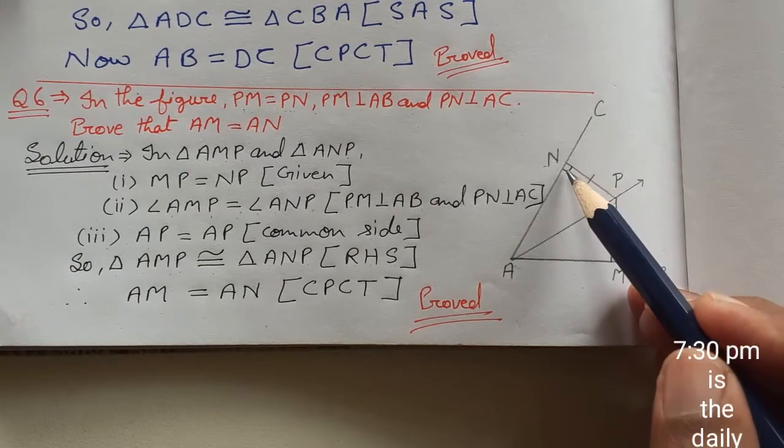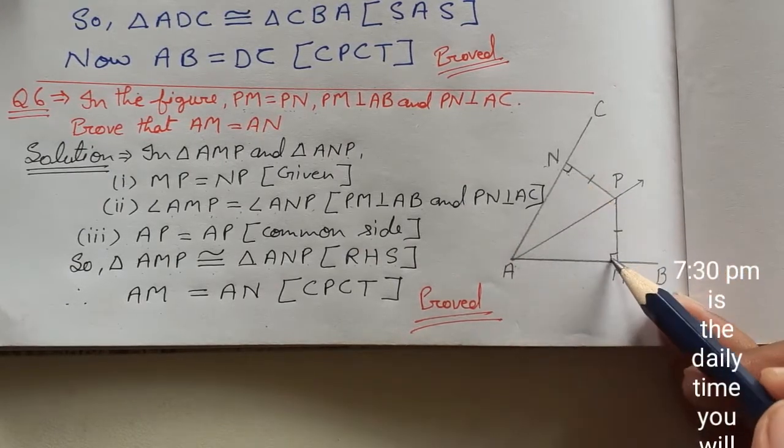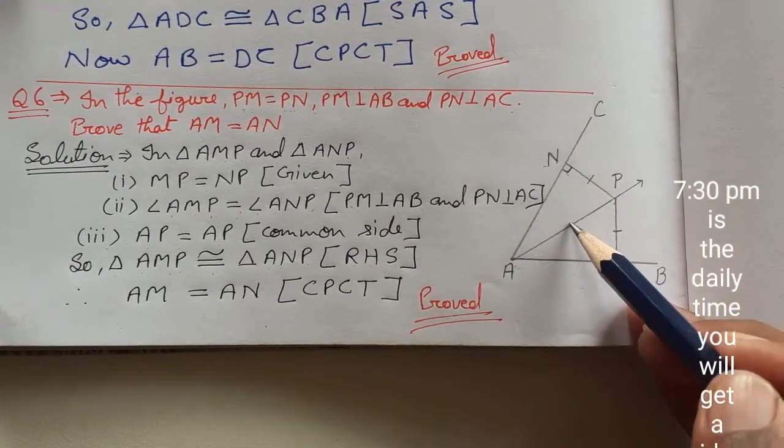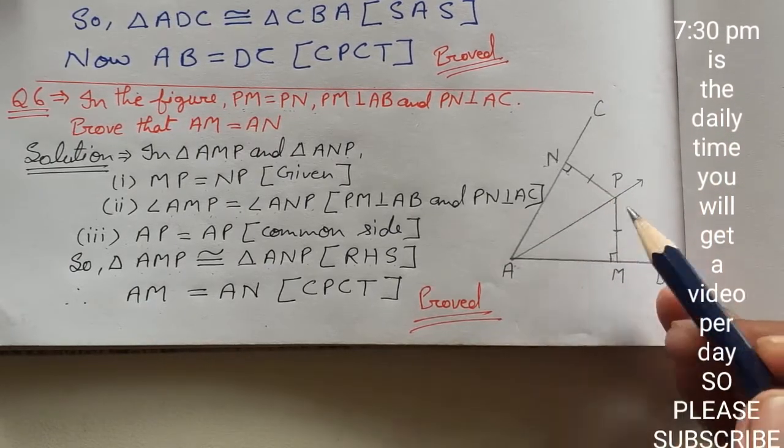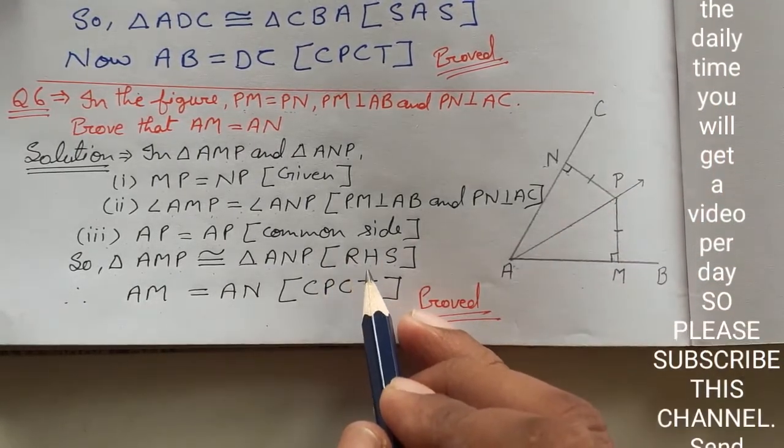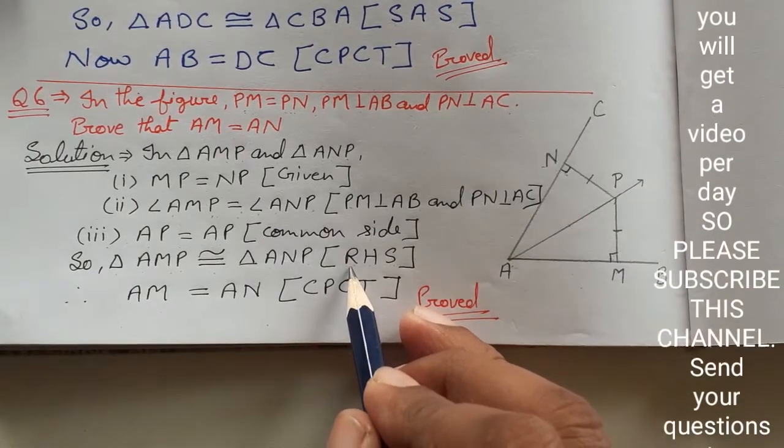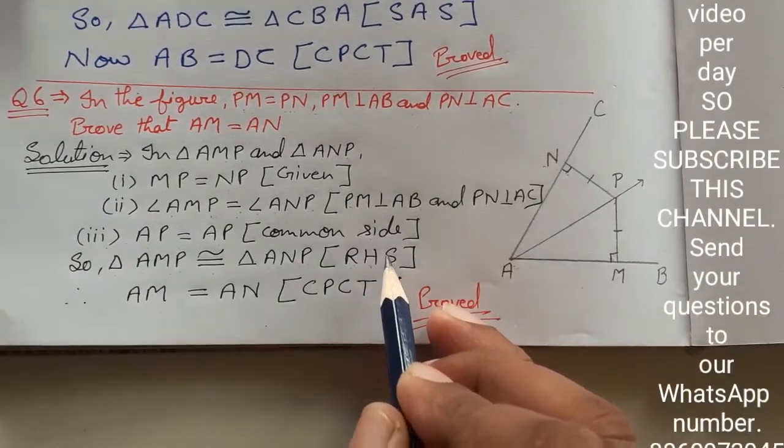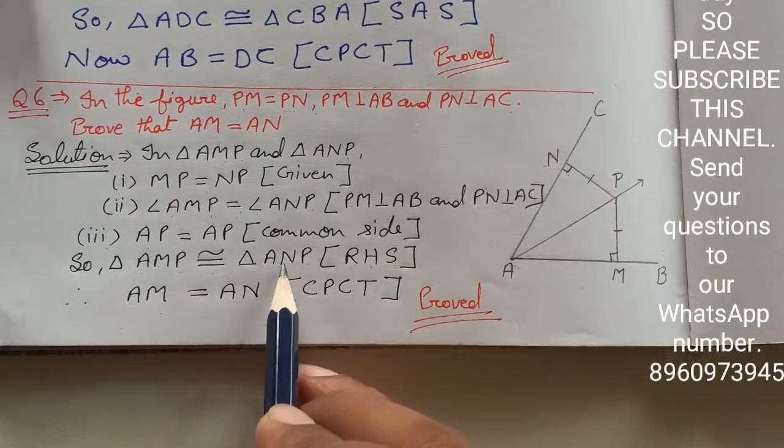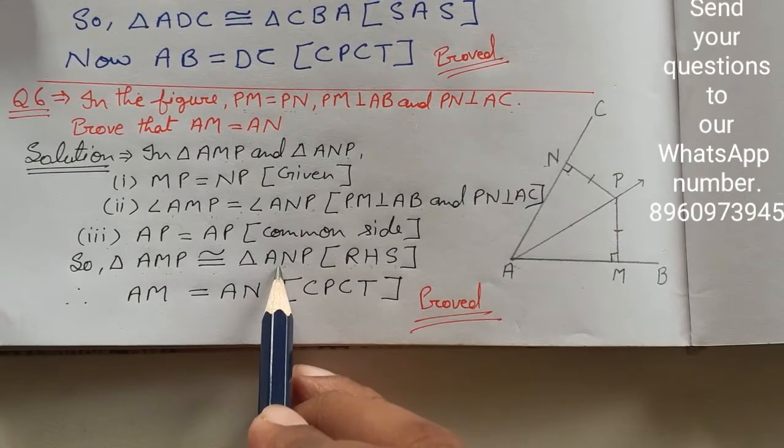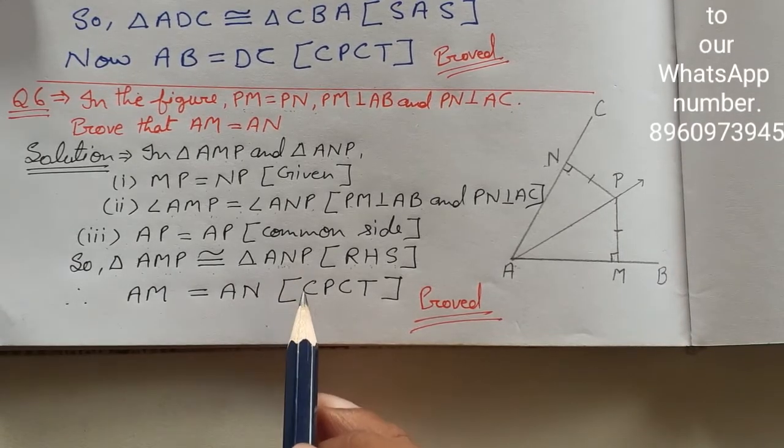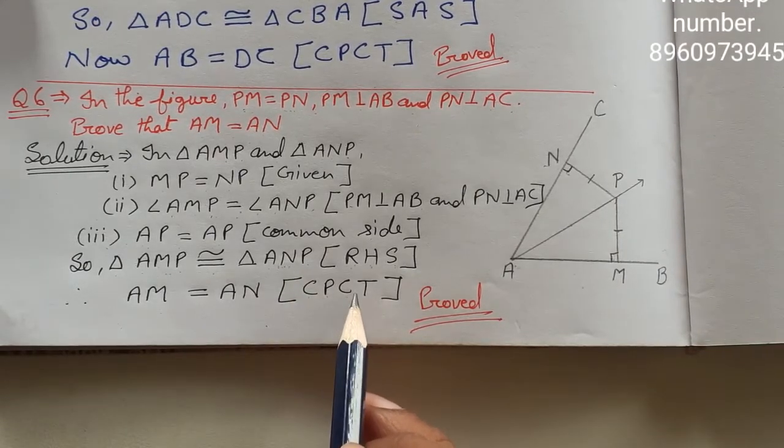देखिए right angle कैसे है, यह हमने जो लिया हुआ था angle, यह right angle था। इसके सामने की जो side है, यह common side जो आई थी, यह hypotenuse है, और एक side equal है। तो इसमें जो congruence criterion यूज होगा, वो यूज होगा right angle hypotenuse side यानि RHS। और जब दो triangles को हम congruent proof करा देते हैं, तो उनके remaining three elements भी आपस में equal हो जाते हैं, और वो property होती है corresponding parts of congruent triangles.